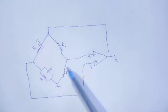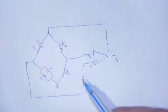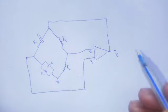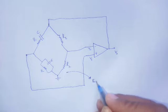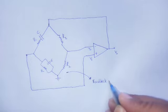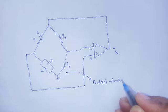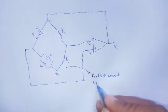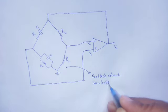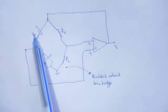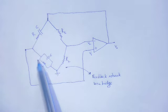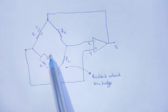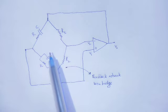The op-amp and the Wien Bridge arrangement together form the feedback network. The arrangement of R and C in parallel as well as in series is responsible for the frequency response of that oscillator.